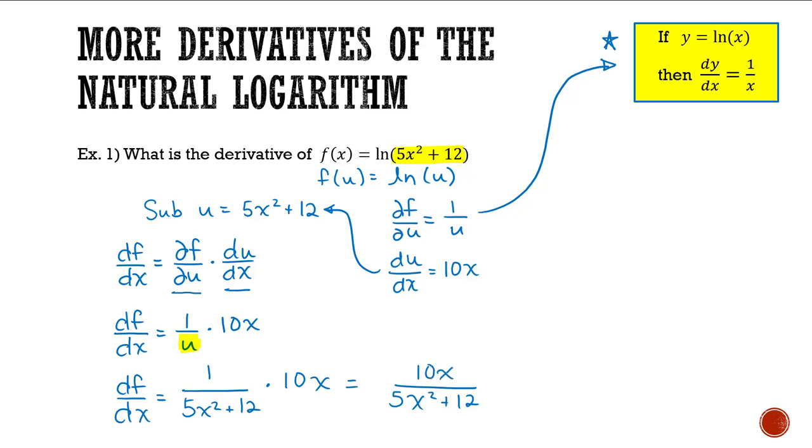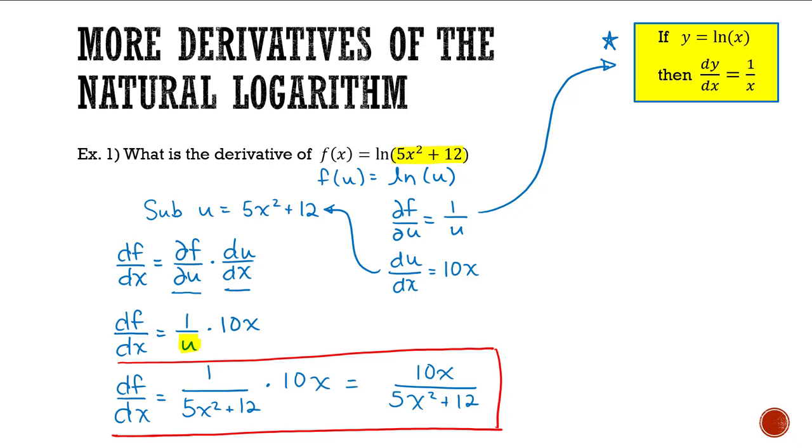This can also be written with (5x² + 12) as the denominator and 10x in the numerator. Either expression works — these are our final answers.